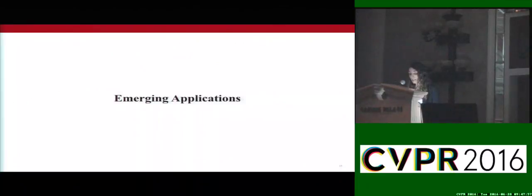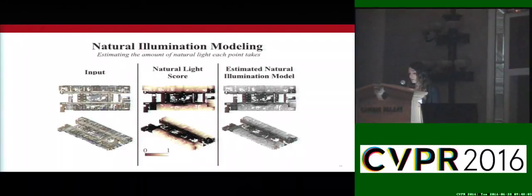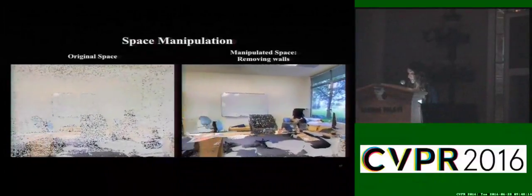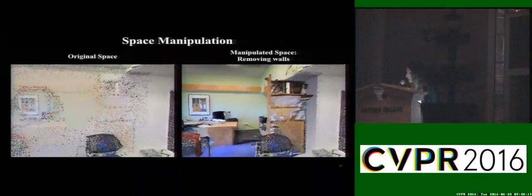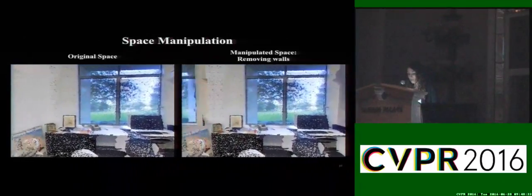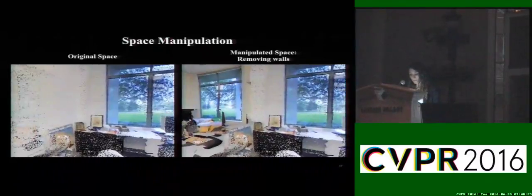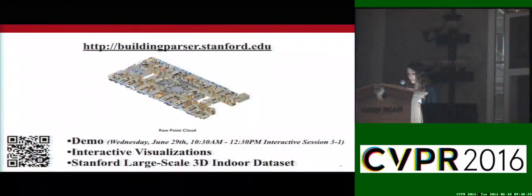Finally, we show a few applications that emerge from such an understanding of large-scale point clouds. We can compute a coarse natural illumination model of the scanned space by calculating the relative distance of each point from the windows, taking into account other semantics such as doors and walls. Another application is semantic manipulations — we can easily visualize how adjacent spaces would look if we were to remove the in-between walls, or remove or replace any detected object. All material shown today, as well as the dataset, interactive visualizations, and code are available on our project website. A demo will also become available that allows users to upload their own point cloud data and receive the parsing results.